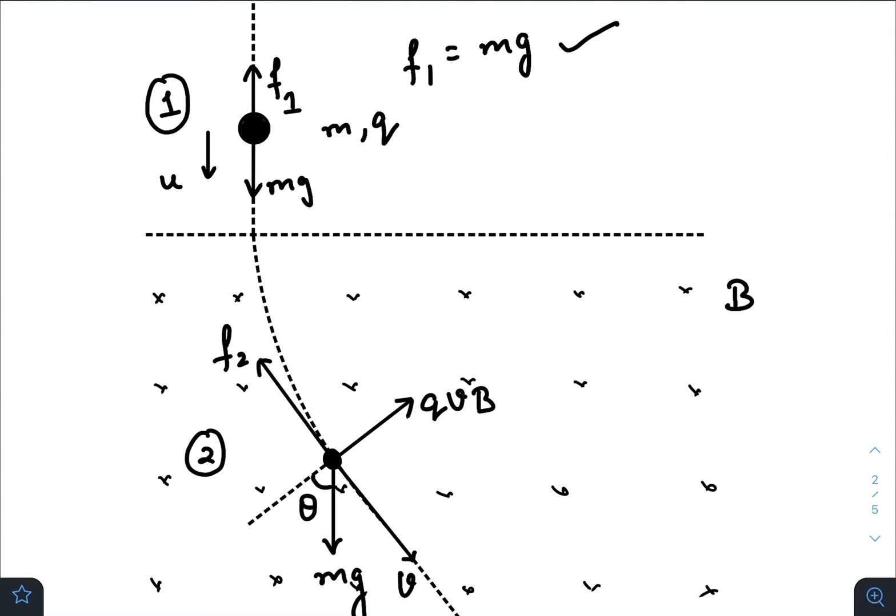The direction of the resistive force also changes. Of course gravity is also present. Now due to the change in the direction of the resistive force there will be a change in the speed u. So this speed u changes to some other value due to the tangential direction of the resistive force.